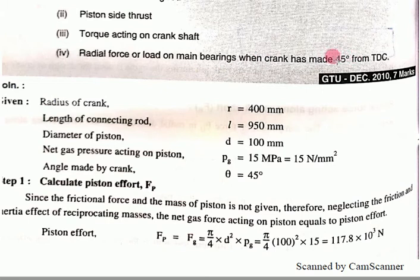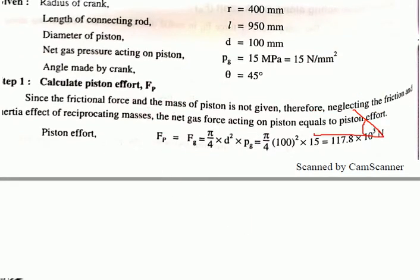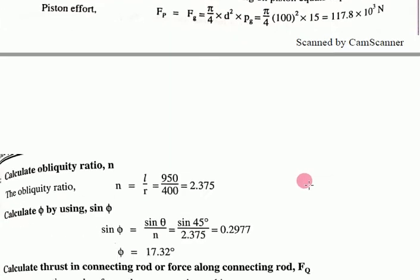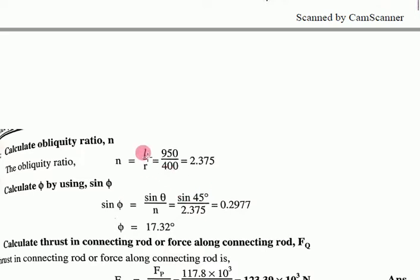To calculate piston effort Fp: since frictional force and mass of piston are not given, neglecting inertia force, the net gas force equals piston effort. Fp = Fg = π/4 d² × pg = π/4 (100)² × 15 = 117.8 × 10³ N. The obliquity ratio n = l/r = 950/400 = 2.375.